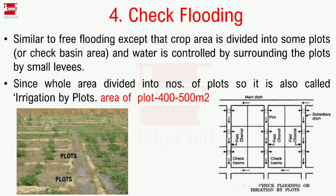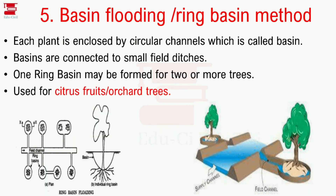Basin flooding is the ring basin method. Each plant is enclosed by a circular channel called a basin. One circular channel surrounds one plant. Water is supplied through small field ditches to each basin. This method is suitable for citrus fruits and similar orchard crops.